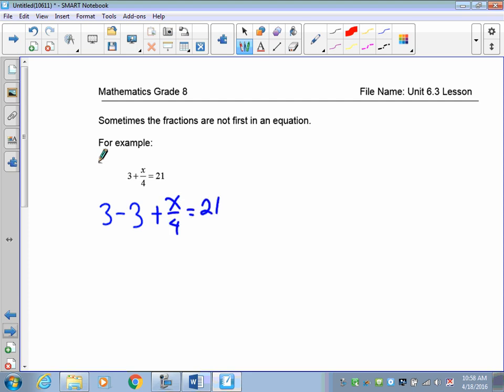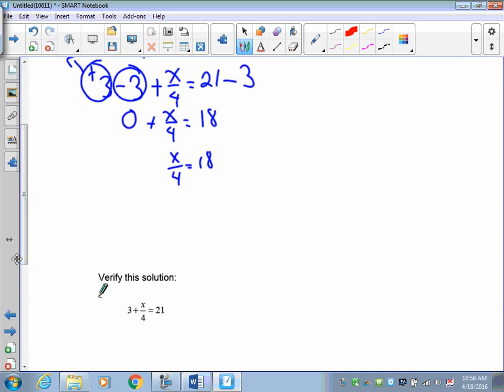Whatever I do to one side, I must do to the other. Now 3 take away 3 is 0, or you can think it is 3 positive tiles and 3 negative tiles become 0. Plus x over 4 is equal to 21 take away 3, which is 18. So x over 4 is equal to 18. So next step, I'm dividing by 4 here. So if you do divide by 4, I'm going to multiply by 4. So x over 4 times 4 is equal to 18 times 4. 4 divided by 4 is 1. 18 times 4 is 72. So x is equal to 72.